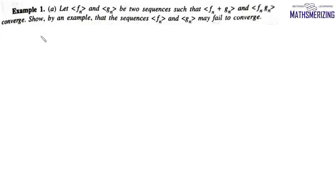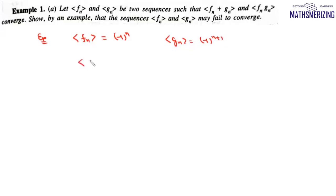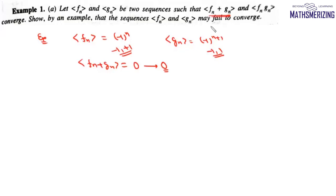Let fₙ and gₙ be two sequences such that fₙ + gₙ and fₙ · gₙ converge. Show by an example that the sequences fₙ and gₙ may fail to converge. Take fₙ = (-1)ⁿ and gₙ = (-1)ⁿ⁺¹. Then fₙ + gₙ = 0, which is a constant sequence that converges to 0. However, both fₙ and gₙ have oscillating values between +1 and -1, so neither sequence converges.